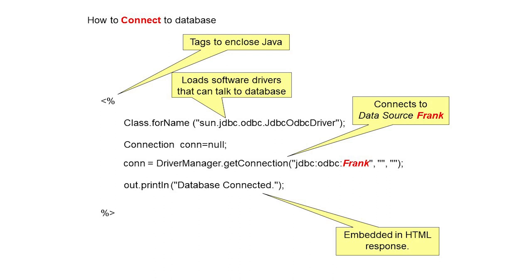We pass "jdbc:odbc:" followed by the data source name (DSN). The DSN — here named 'frank' — is a database DSN name that must be created beforehand. By this line we are directly connected to the database. In the fourth line, out.println will display a 'database connected' message. If the connection is not established, this message will not appear on screen.